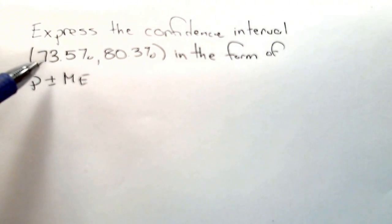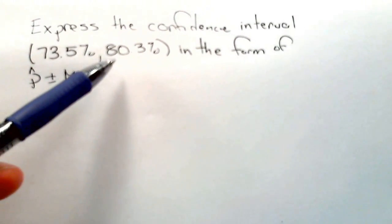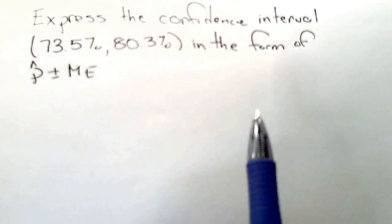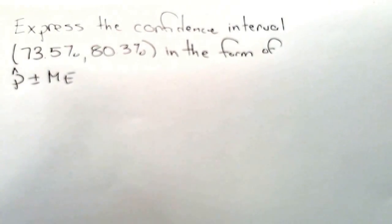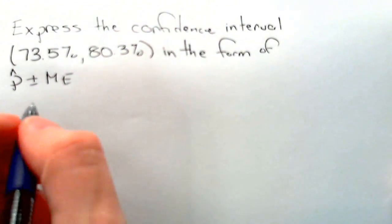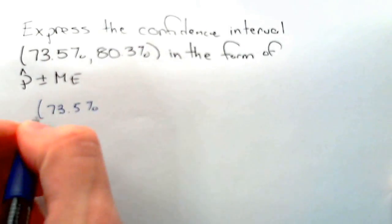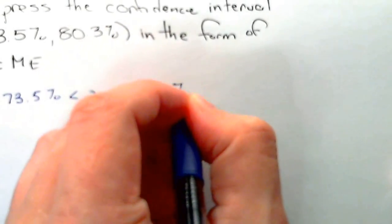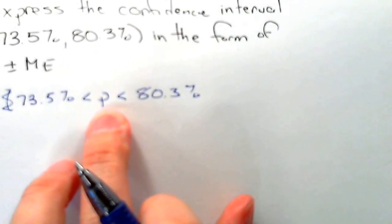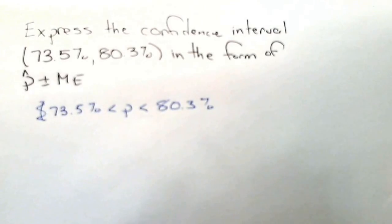Express the confidence interval 73.5% to 80.3% in the form of p-hat plus or minus the margin of error. This is the same as saying 73.5% is less than p and less than 80.3% — in other words, the population proportion is between these two numbers for this confidence interval.